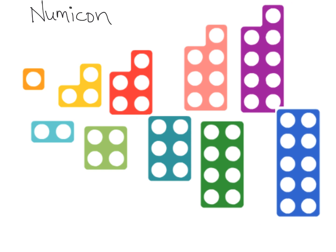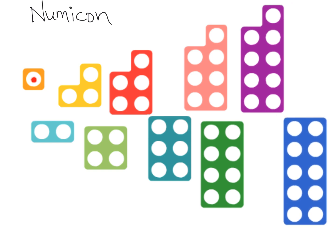You can see how the evens and odds alternate: odd, even, odd, even, odd, even, odd, even. To go from an even and take one away, you get an odd. If you go from an even and add one, you get an odd. And vice versa — if you start with an odd and add one, you're going to get an even.